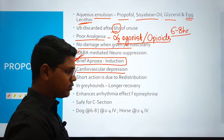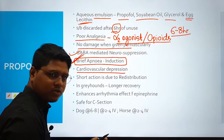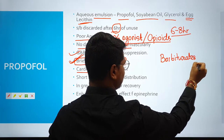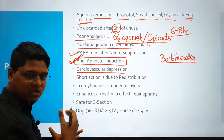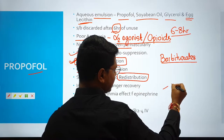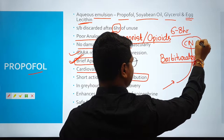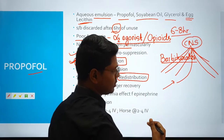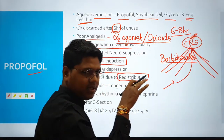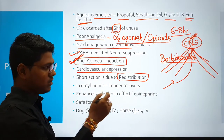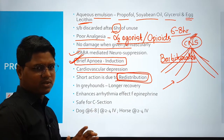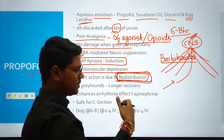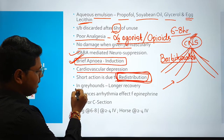Like barbiturates, propofol also causes cardiovascular depression. The short duration of action — applicable to both short-acting barbiturates and propofol — is due to the phenomenon of redistribution. When you inject the drug, it first goes into the CNS and attains a concentration causing CNS depression. After that, it is redistributed to different tissues, the effective concentration drops, and there is recovery. This has appeared in PCS examination questions about thiopental — the anaesthetic effect reduces due to redistribution.